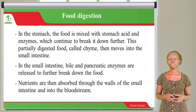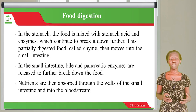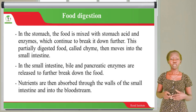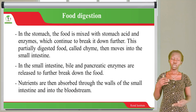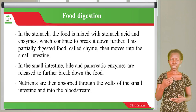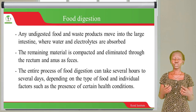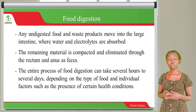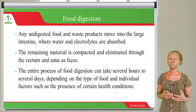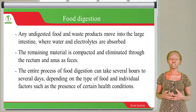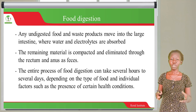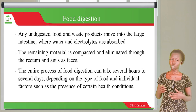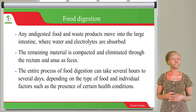Once in the small intestine, bile and pancreatic enzymes are released to further break down the food. The nutrients are then absorbed through the walls of the small intestine into the bloodstream. Once all the nutrients are absorbed from the chyme, any undigested food and waste products move into the large intestine, from where water and electrolytes are absorbed further. The remaining material is then compacted and eliminated through the rectum and anus as feces.